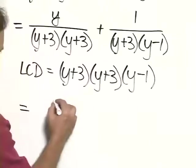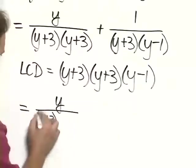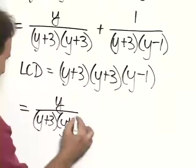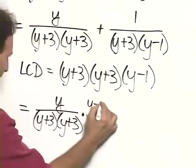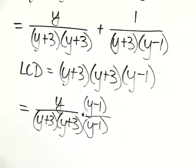this expression, y over y plus 3 times y plus 3, we would have to multiply by y minus 1 over y minus 1.